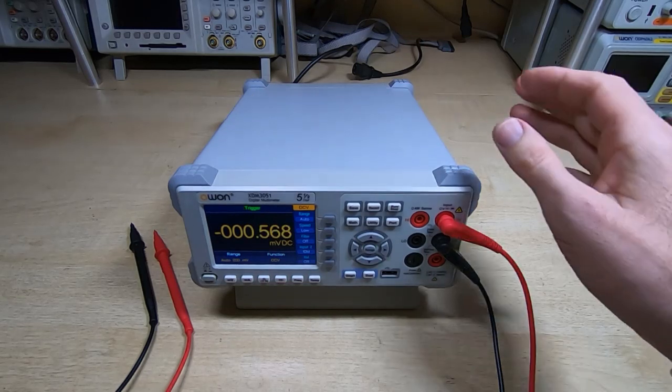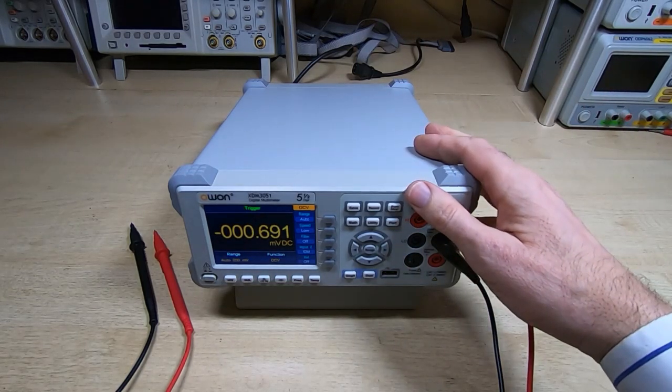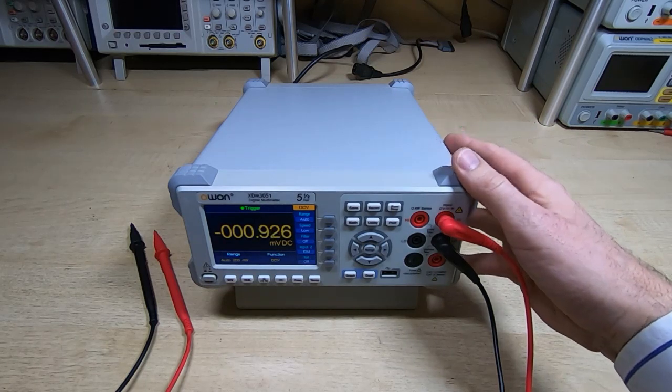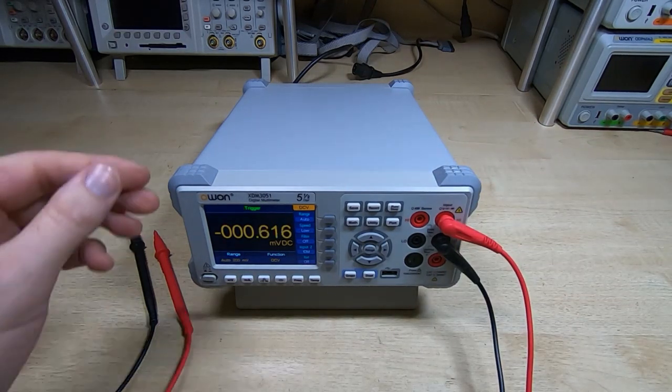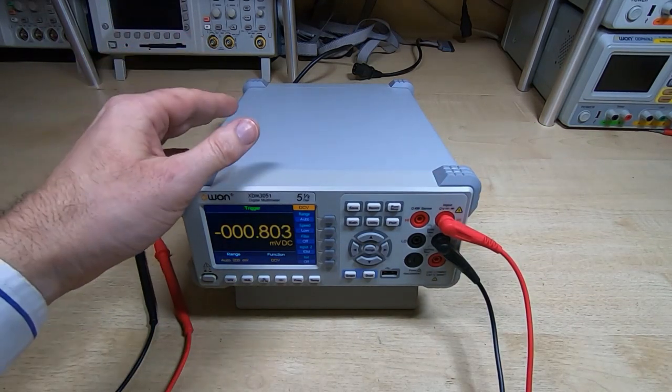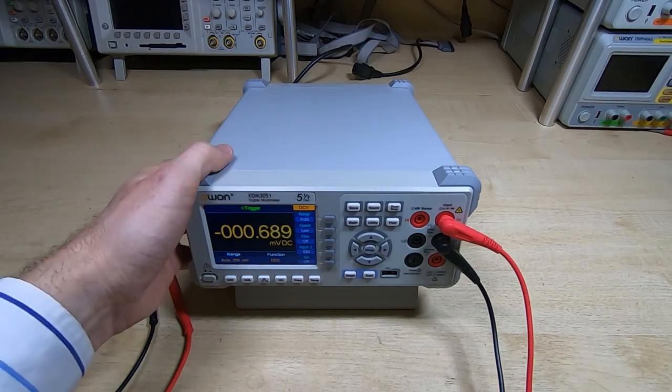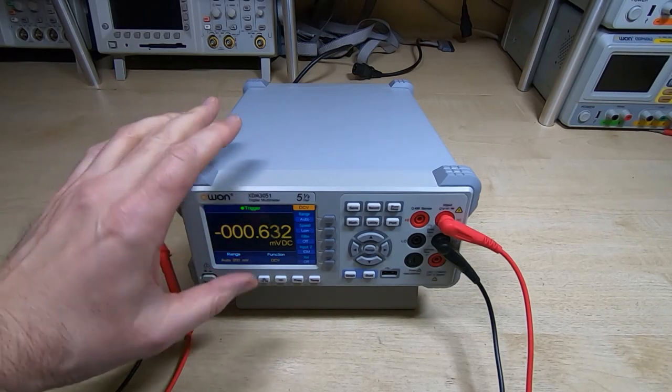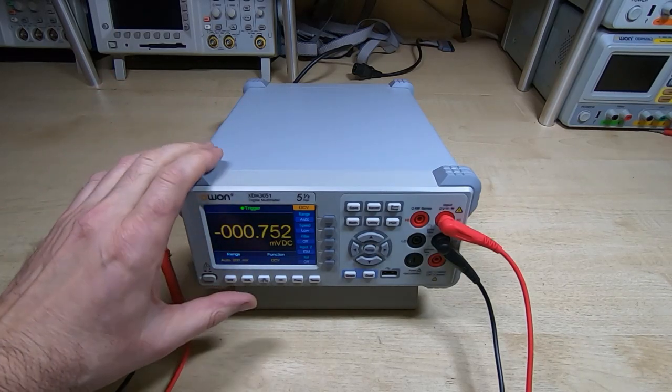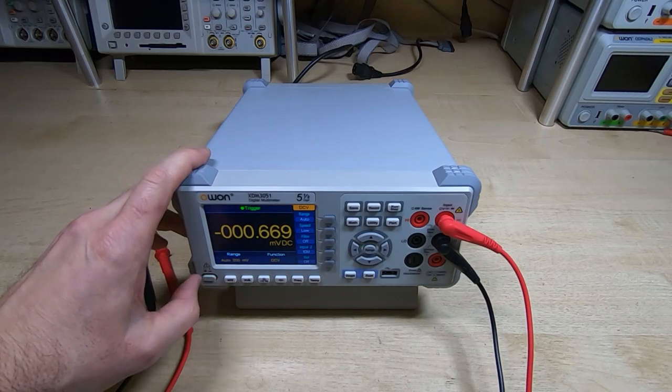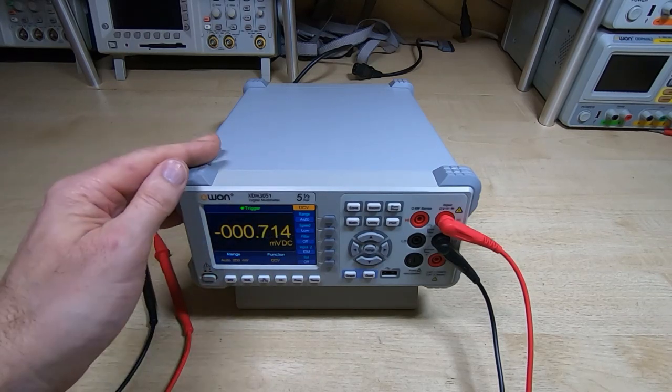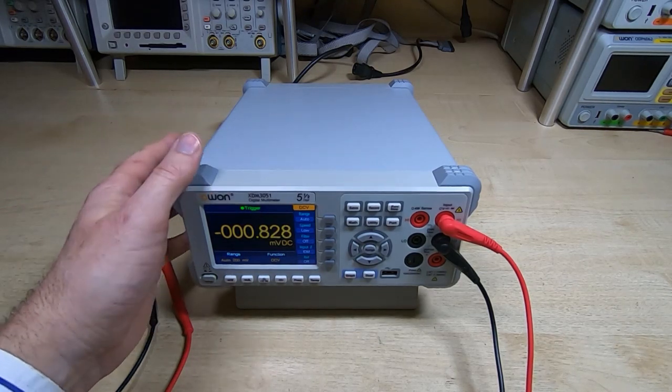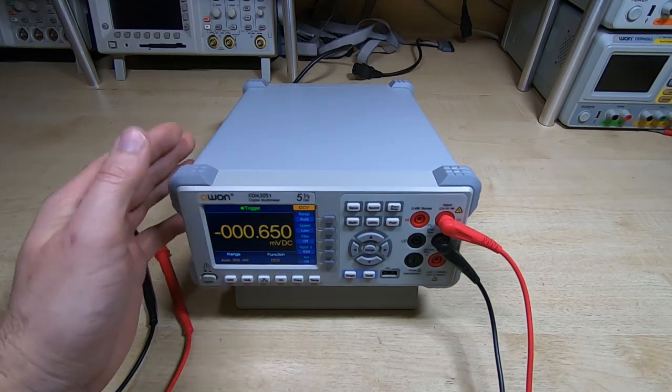In my previous video I had a quick look at this OWON XDM 3051, a five and a half digit bench multimeter. As multimeters go it's not a cheap meter, but for a five and a half digit bench multimeter it's quite a reasonable cost. I compared this with my Agilent 34461A, which is a six and a half digit multimeter, and this stacked up fairly well. The accuracy was very good.